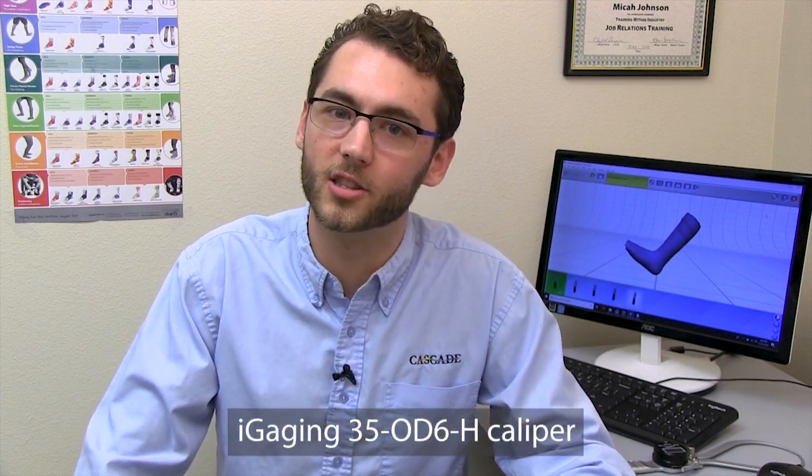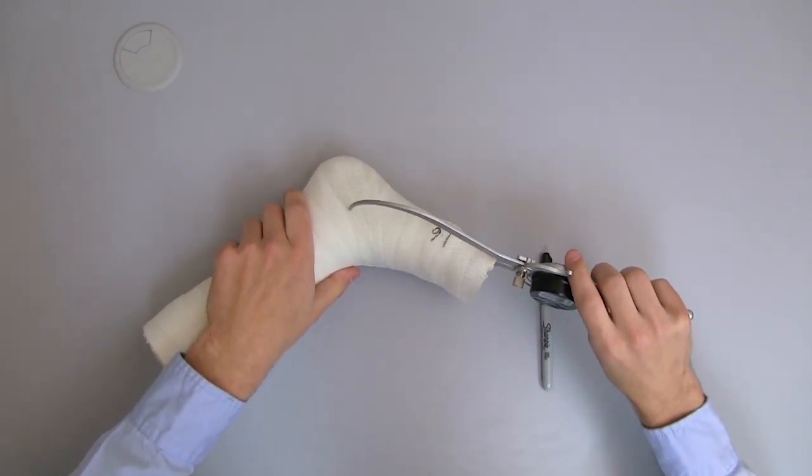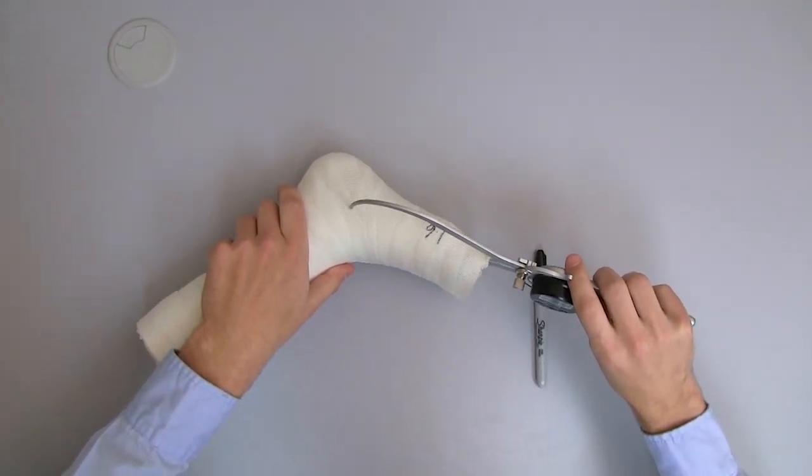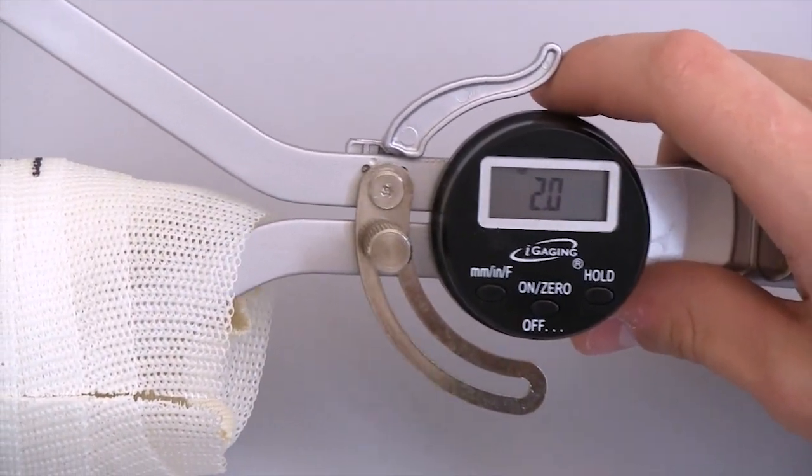The calipers we are recommending are the iGaging 6-inch digital calipers. We prefer these calipers because they have a large mouth that allows you to measure deep into the cast and they're very accurate at measuring small thicknesses. We'll be dealing down to the tenth of a millimeter.